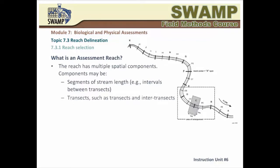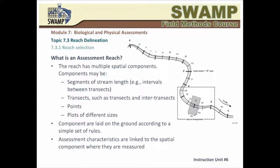The assessment reach has multiple spatial components of different types. Some components are stream segments, such as the entire reach or the intervals between two adjacent transects. Other components are lines laid across the stream, such as the transects and inter-transects. Many components are points — for example, all 105 transect points where you do substrate measurements. Another type of spatial component is plots, ranging from small 4 cm circles for algae subsamples, through the 1 square foot BMI sampling plots, to the large in-stream habitat complexity plots and riparian plots. All components are nested within the reach, often with internal hierarchy.